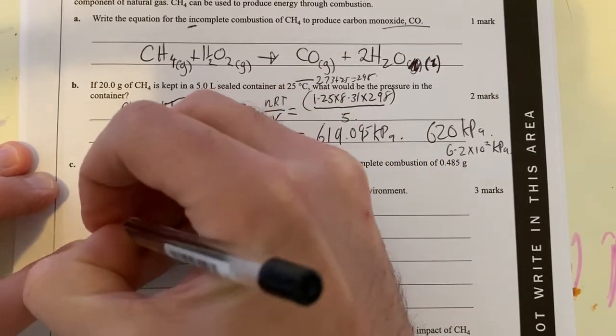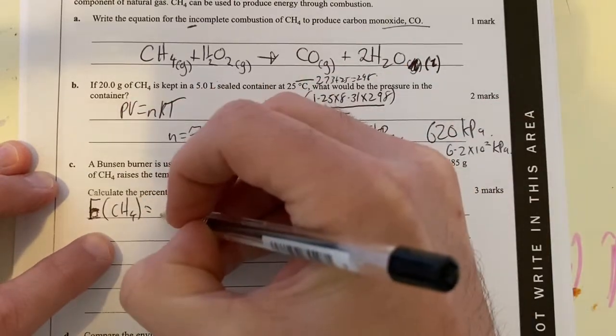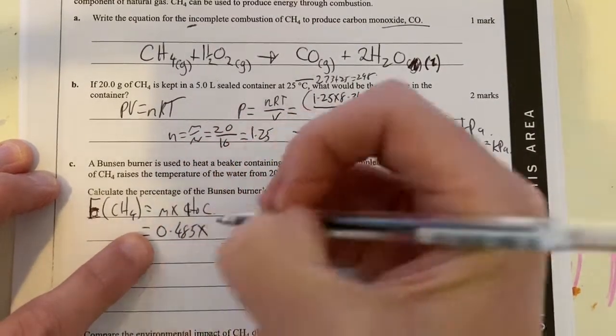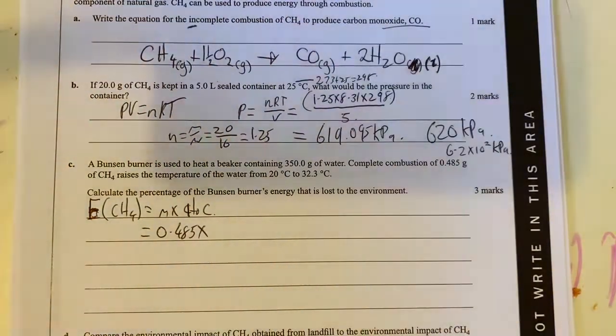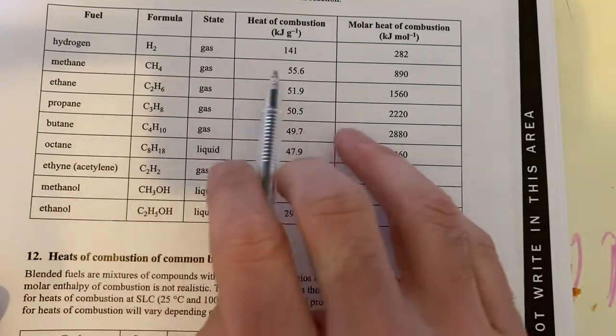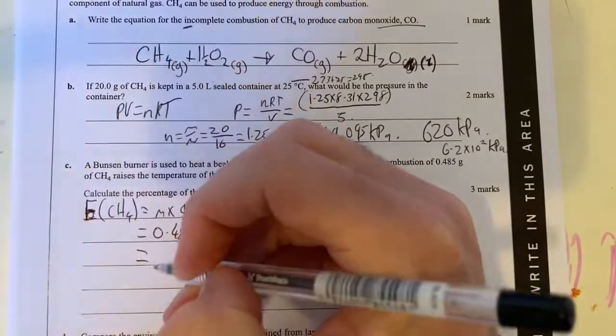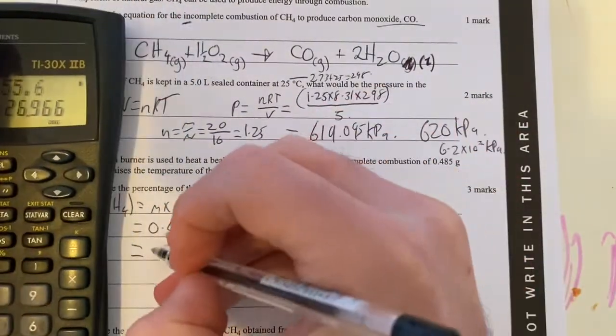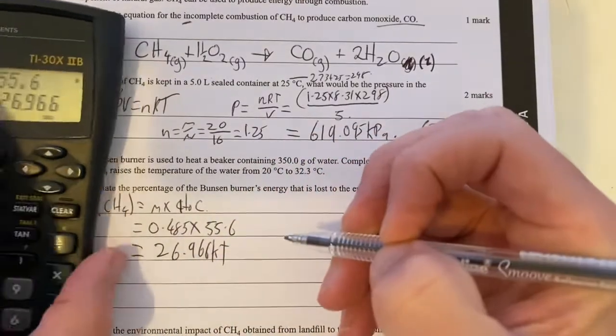So energy from my methane will be my mass times my heat of combustion from my data booklet. If I'm using 0.485, my heat of combustion from my data booklet, if I try and find that here somewhere, where is it? Heats of combustion in my data booklet. It's on the next page. There it is. My heat of combustion of methane is 55.6. So I can work out that 0.485 times 55.6 gives me 26.966 kilojoules of energy was released from my methane.